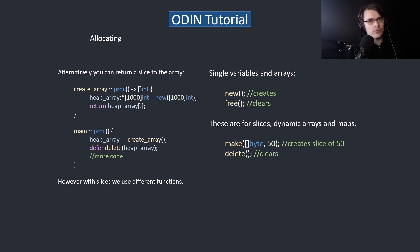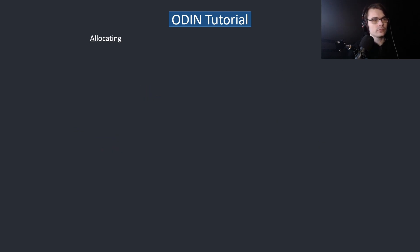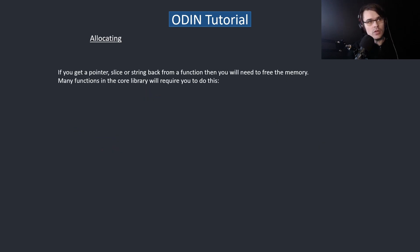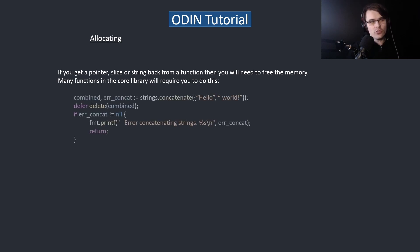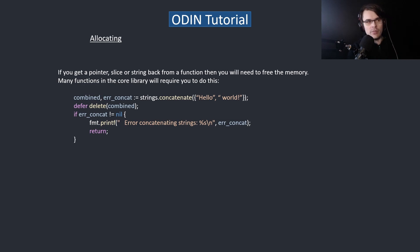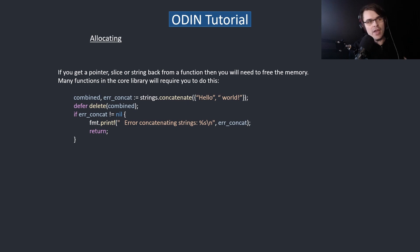If you get a pointer, slice, or string back from a function, you'll need to free the memory. Many functions in the core library will require you to do this. For example, in the last episode we concatenated two strings together — we have to delete it because a string is basically a pointer with a length. If you go to another function, create something, and get a string back, you need to delete it. You can also pass a buffer to the function and get a string back without needing to delete it, but that's a bit different.